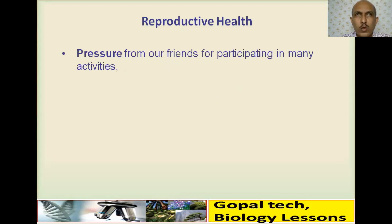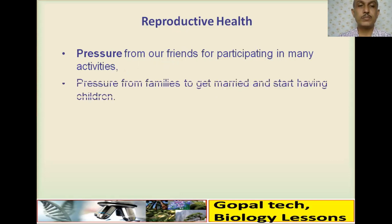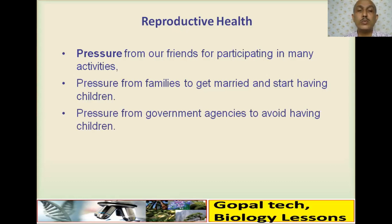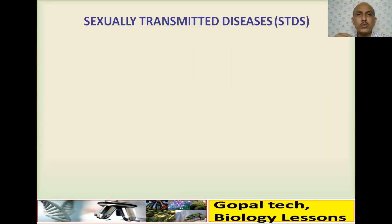During adolescence, there is a lot of pressure — from friends to participate in activities, from families especially on girls to get married and have children once they cross 18 or 20 years of age, and even from government agencies to avoid having more children. There are also chances of STDs — sexually transmitted diseases.